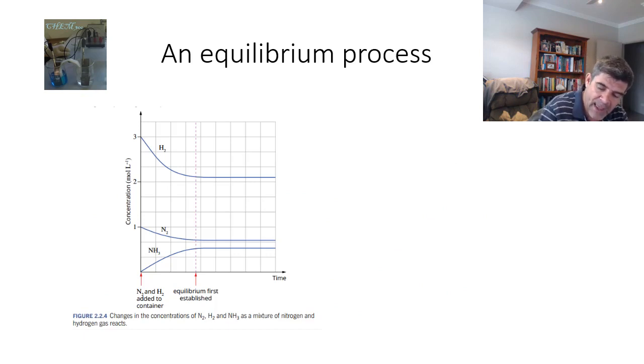When we look at this in terms of the time, the reaction proceeding, we can see what's going on here. Initially, we have no ammonia in this case. We have one mole per liter of nitrogen, and three moles per liter of hydrogen.